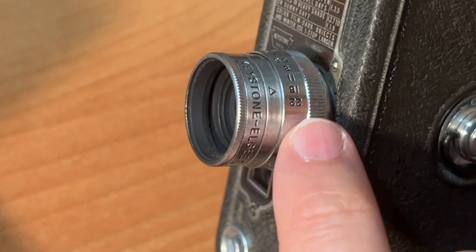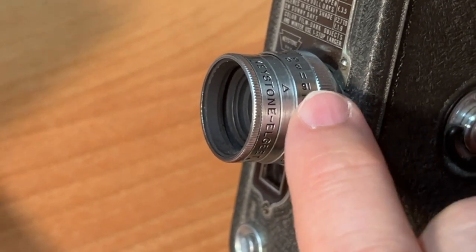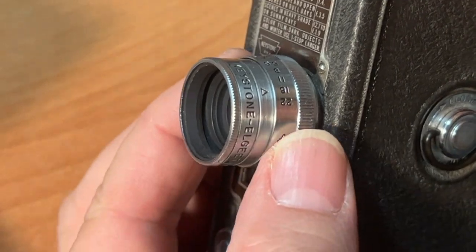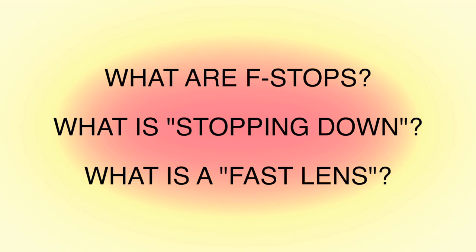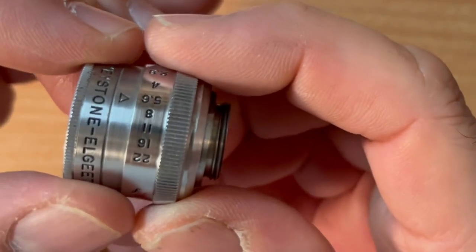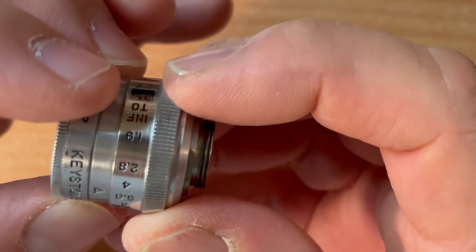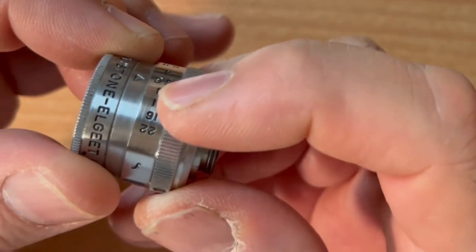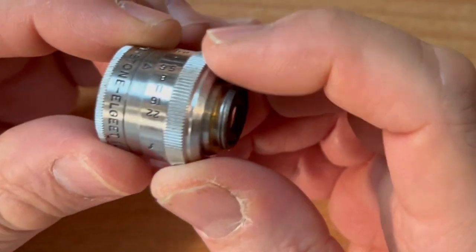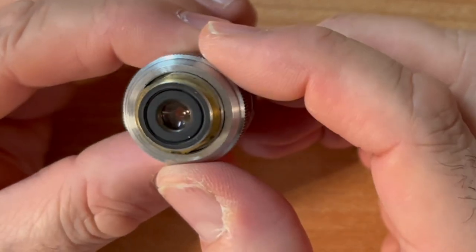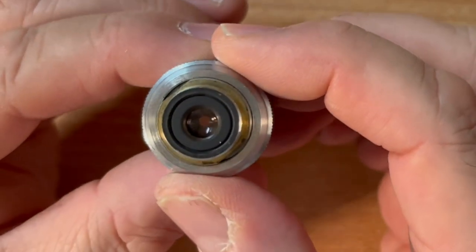Most of the lenses I've seen only stop down to f16, and I think you might be able to get away with 40 ISO film stopped down to f16. When I'm talking about lenses, I'm talking about f-stops — f1.9, f2.8, f4, all the way up to f22. What I'm talking about is each setting is the amount of light that a lens lets in that hits your film.